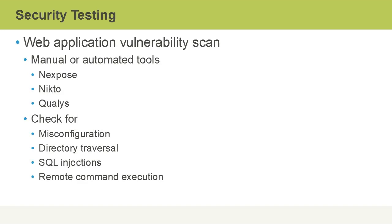A web application vulnerability scan is another way to test the security of an application. This can be manual or automated. There are tools such as Nexpose, Nikto, or Qualys-related tools that will do this type of web app vulnerability scan for us, checking for things like standard misconfigurations or the allowing of directory traversals through the web app file system. Vulnerability scanning toolkits such as Vega can check for the possibility of SQL injection attacks due to improper field validation on web forms, and also things like remote command execution.